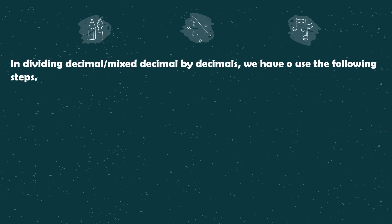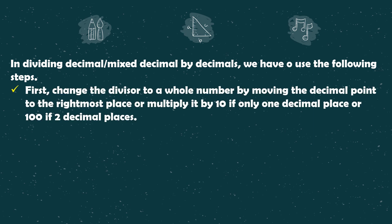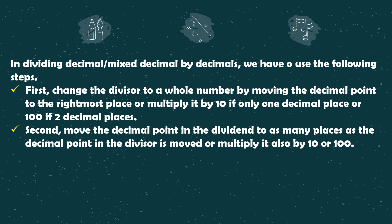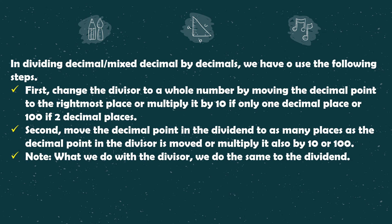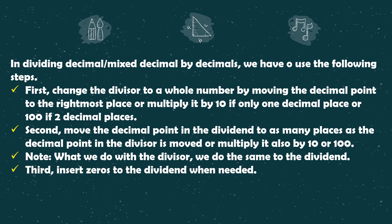In dividing decimal or mixed decimal by decimals, we have to use the following steps. First, change the divisor to a whole number by moving the decimal point to the rightmost place, or multiply it by 10 if only 1 decimal place, or by 100 if 2 decimal places. Second, move the decimal point in the dividend by as many places as the decimal point in the divisor was moved, or multiply it also by 10 or 100. Note: what we do with the divisor, we do the same to the dividend. Third, insert zeros to the dividend when needed.